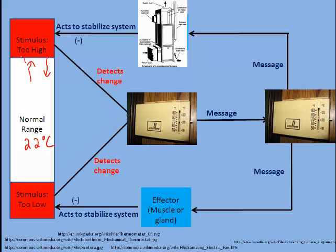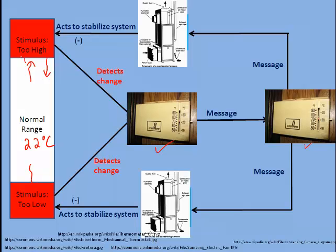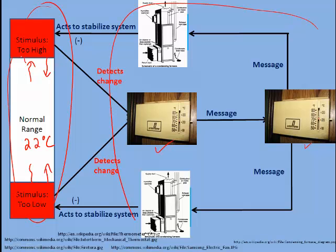On a cold day, if the temperature begins to creep below 22 degrees Celsius, the thermostat would also note that and it would send a message to the furnace, basically telling the furnace to turn on so that the temperature can be brought back up to 22 degrees Celsius. So what we're seeing is that the normal range of temperature is being maintained because of constant monitoring and constant feedback. When the stimulus gets out of the normal range, the response kicks in and something is done to bring it back into the normal range.